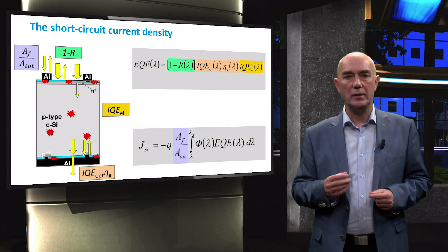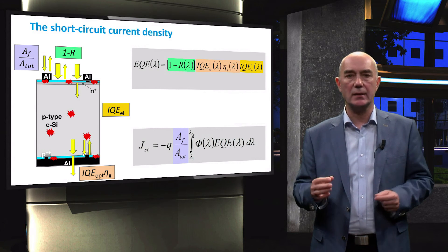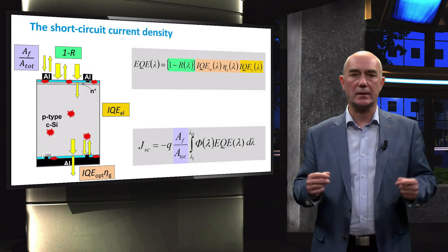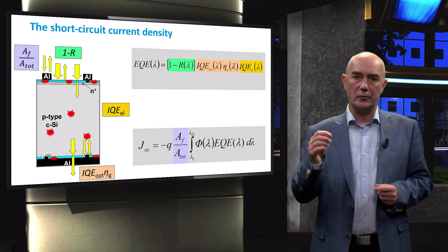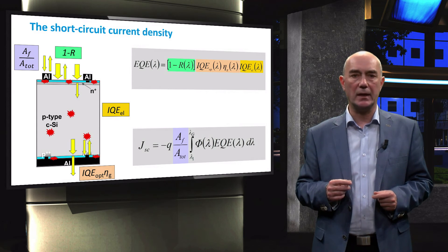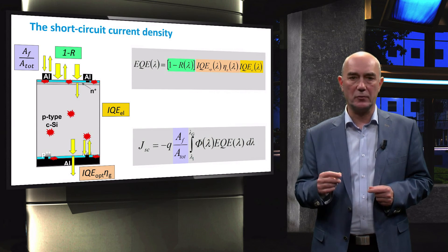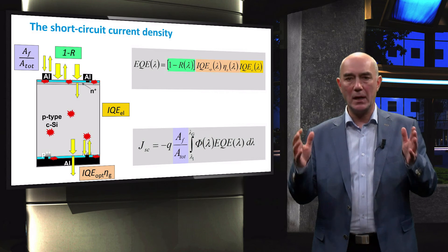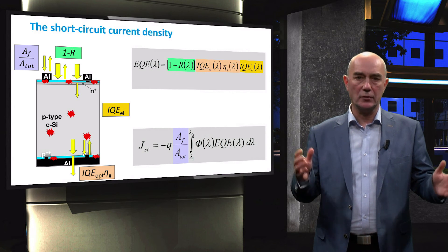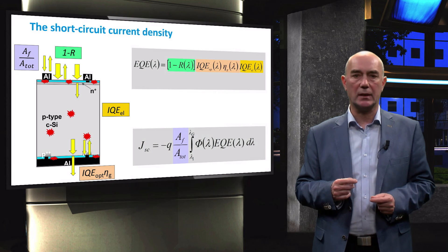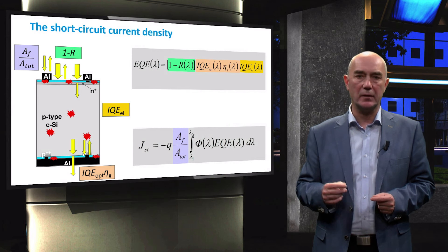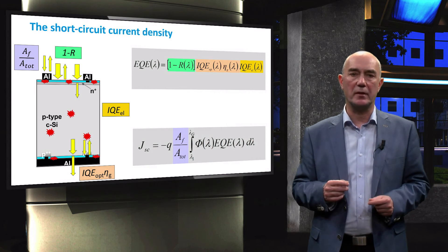Once the EQE is obtained, the short-circuit current density can be computed by integrating the product of the EQE and the photon flux density. The integration range is from 300 nm to the wavelength corresponding to the band gap energy, since the AM1.5 spectrum does not contain much radiation below 300 nm. In addition, front contact shading losses have to be taken into account by multiplying the term by the active area coverage factor introduced in the previous video.